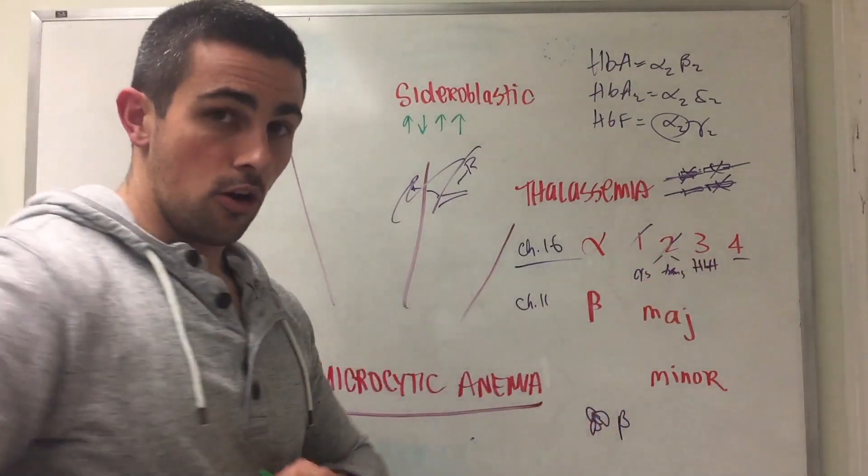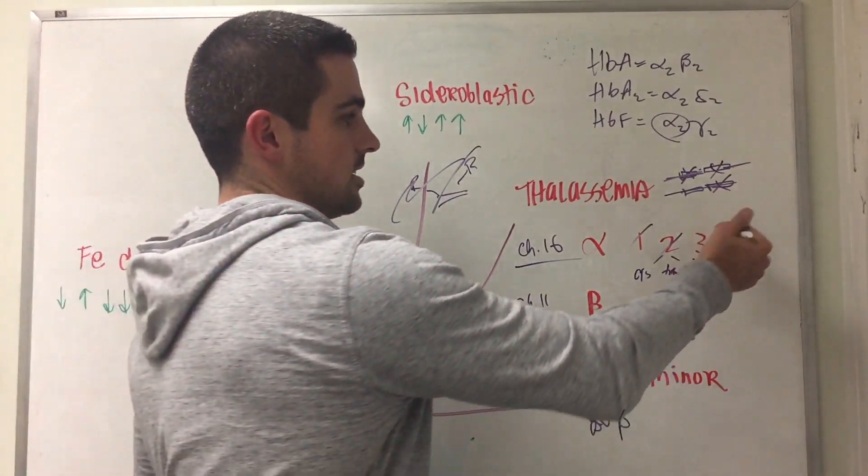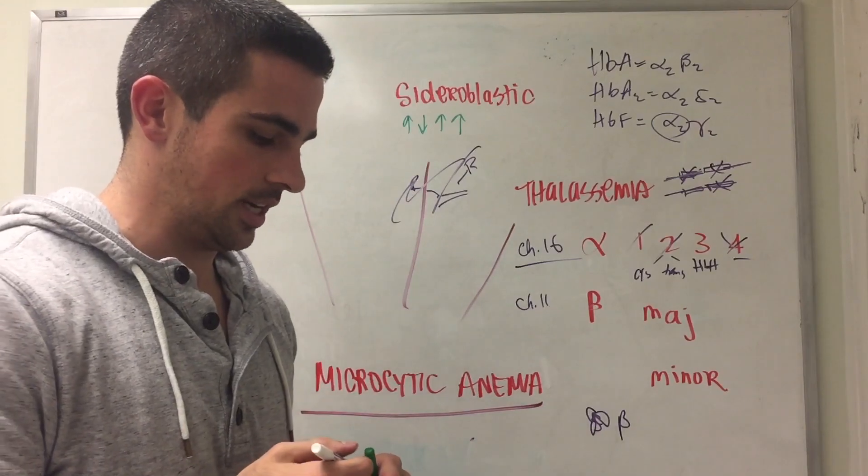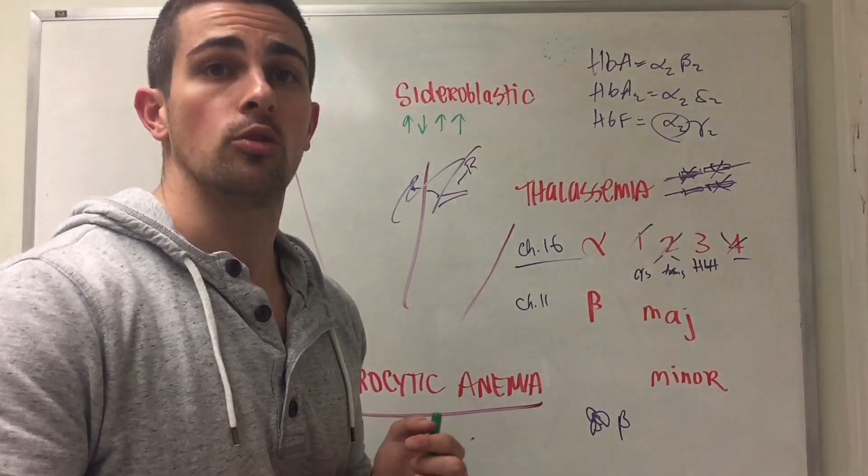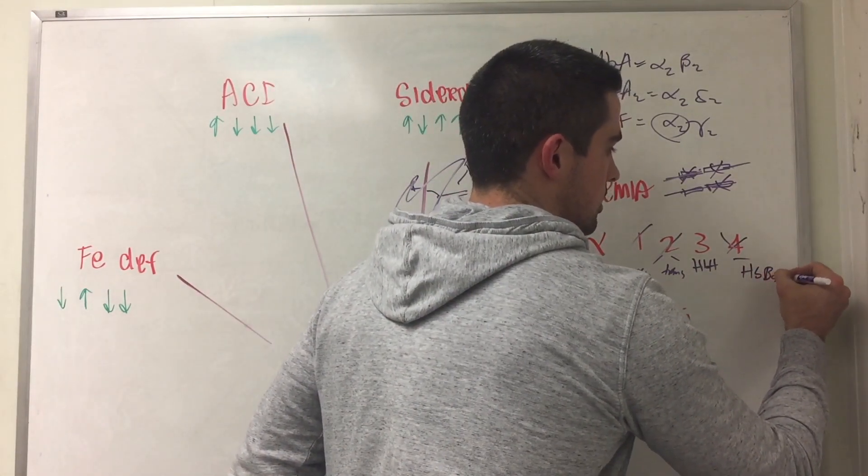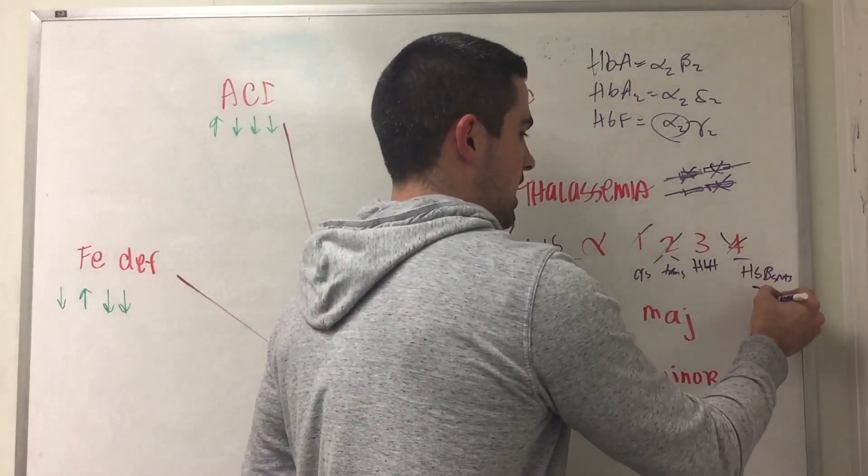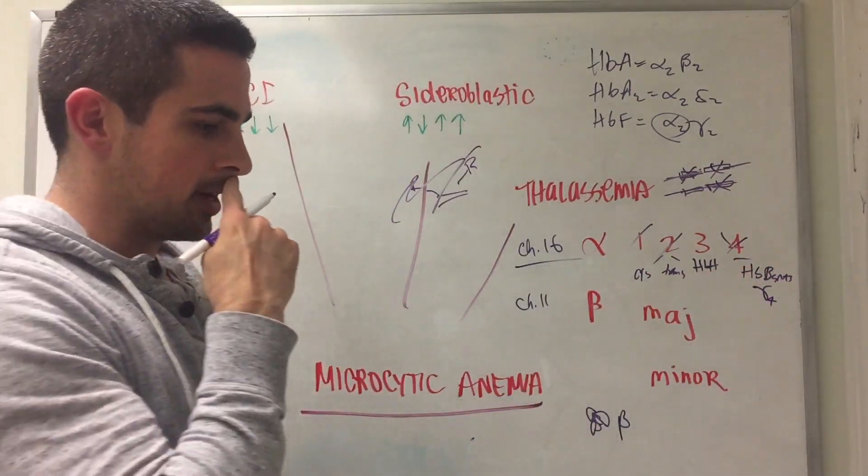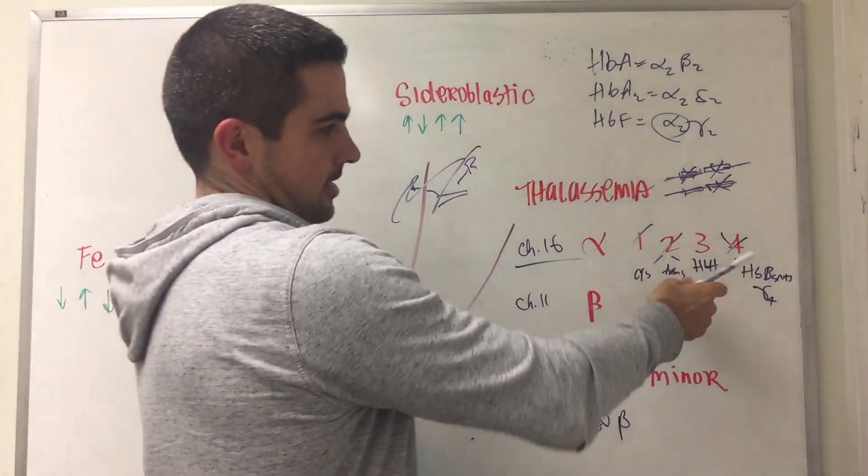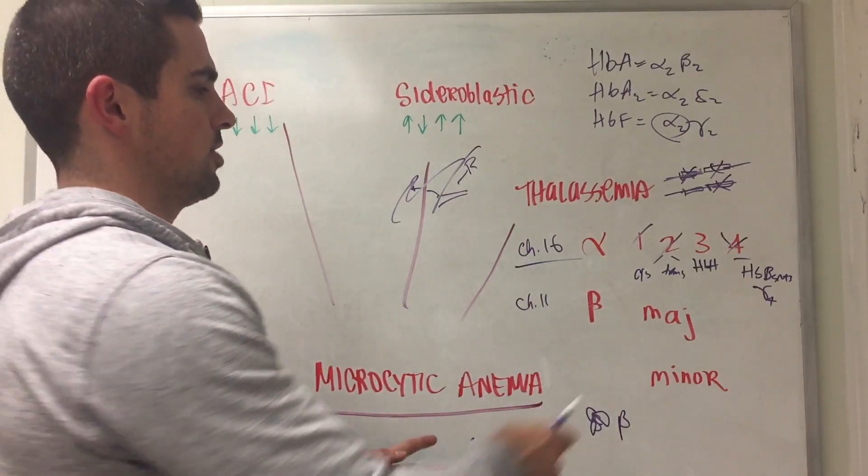The last one, if you have all four alphas deleted, that means you can't make any of these: you can't make A, A2, or F. If that's the case then you have hydrops fetalis. That means in utero the baby is going to die, it's not going to go full term. This is also called Hb Barts and you're going to have a gamma-4 tetramer present there. But you're not going to see these at term. Nobody's going to walk in with missing four alphas. But three is definitely possible.